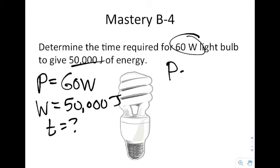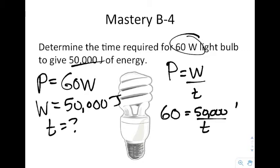We say P equals W over T. We plug in, we get 60 equals 50,000 over T. You need to use algebra. You multiply both sides by T. These cross out, leaving 60T equals 50,000. Now you divide both sides by 60.